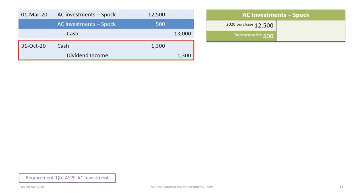Then on October 31st, there's the dividend. It pays $0.26 per share times 5,000 shares, so that's $1,300. We debit Cash and credit Dividend Income — the same treatment as under all the other methods.